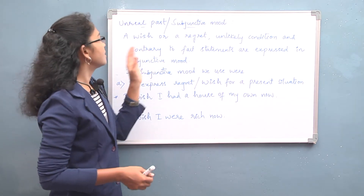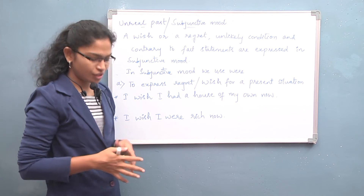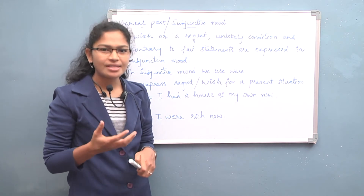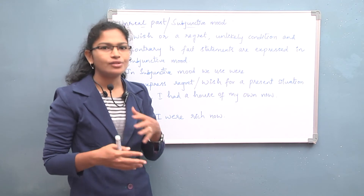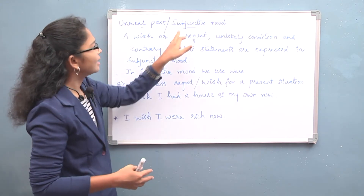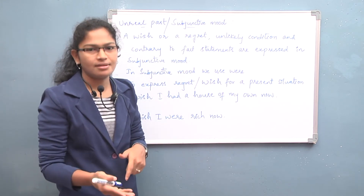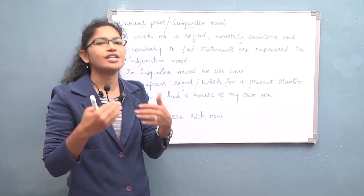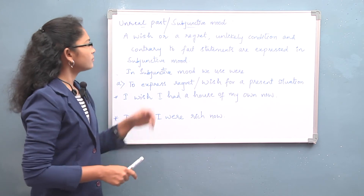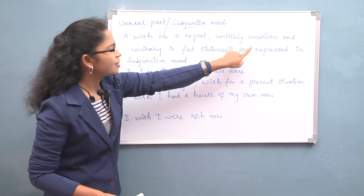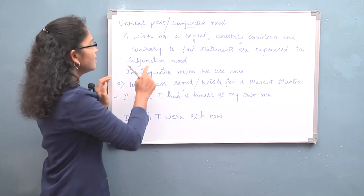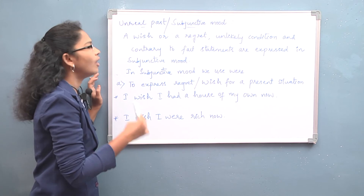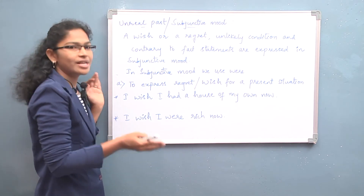Now let's look at unreal past or subjunctive mood. Subjunctive mood is when the speaker expresses regret, a wish, an unlikely condition, or a statement contrary to fact according to the present situation. A wish, a regret, an unlikely condition, and contrary-to-fact statements are all expressed in subjunctive mood.